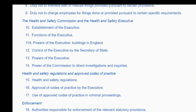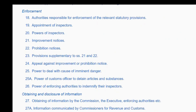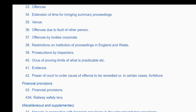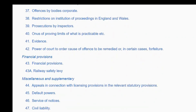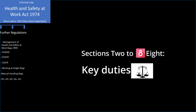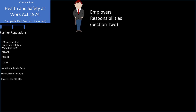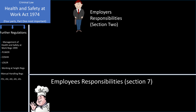Only a limited number of sections are going to be relevant to us, so you're not likely going to have to remember or revise every single part. Sections 2 to 8 consist of eight key duties. The two duties we'll focus on are Section 2 — the general duties of employers to their employees — and Section 7 — the general duties of employees at work.